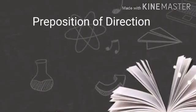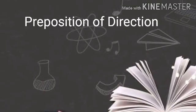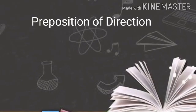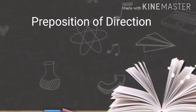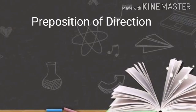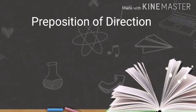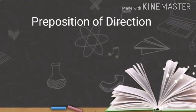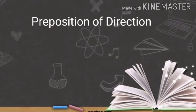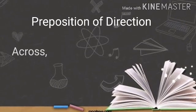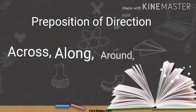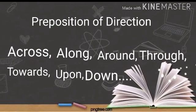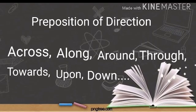Lastly, we can look at prepositions of direction — prepositions that show how or in which direction an event or thing happened. The basic prepositions of direction are: across, along, around, through, towards, upon, down, etc.